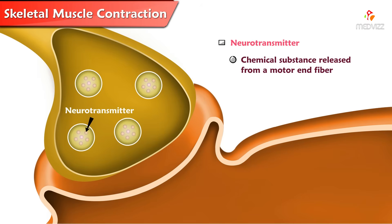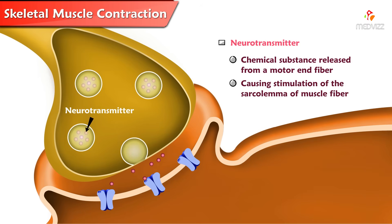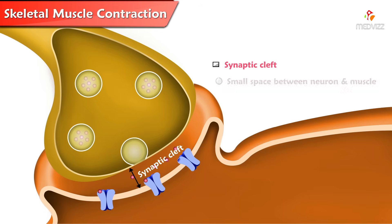Neurotransmitter is a chemical substance released from a motor end fiber causing stimulation of the sarcolemma of a muscle fiber. In this case, it is acetylcholine. Synaptic cleft is a small space between neuron and muscle.